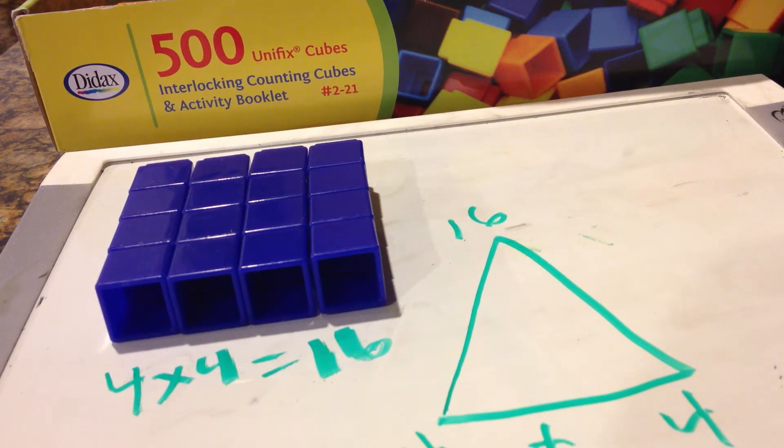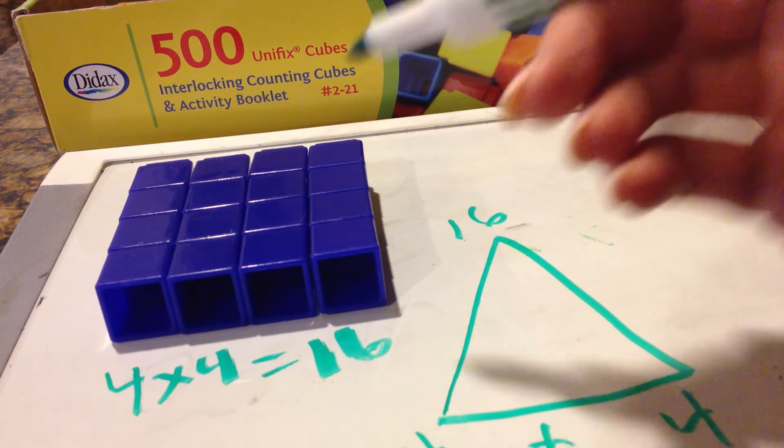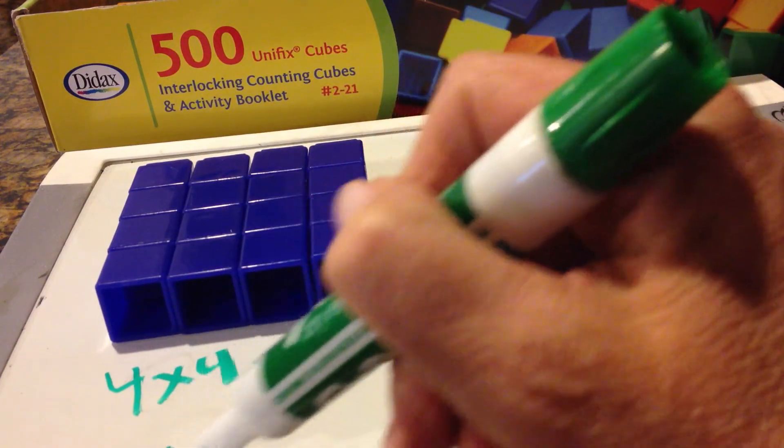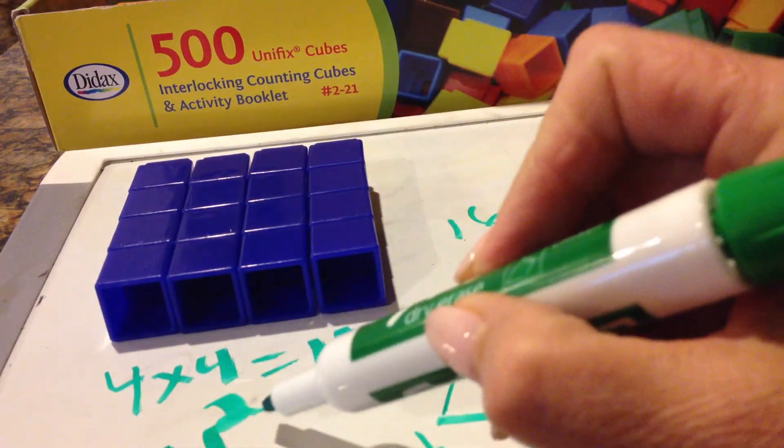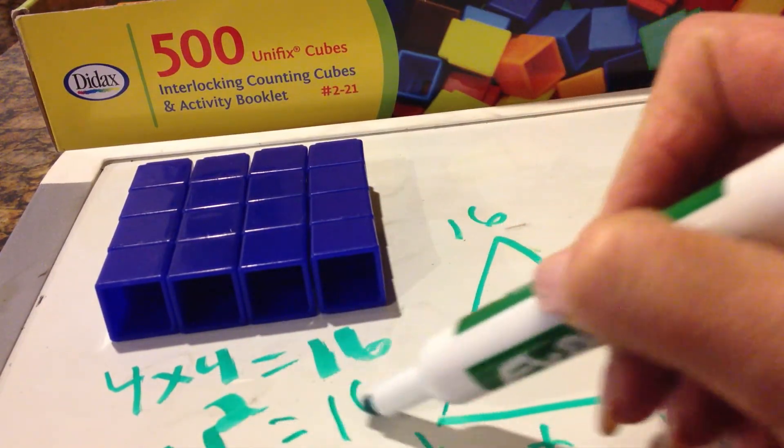They're like, oh my gosh, so 9 times 9 is a square? Yes, indeed. 6 times 6 is a square? Yes. When you look at the real number, it's a square, and that's why it's called a square. So another way to write this is 4 to the second power, or 4 squared equals 16.